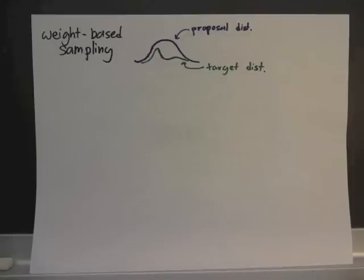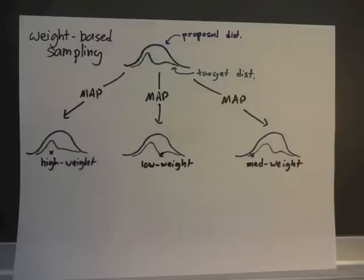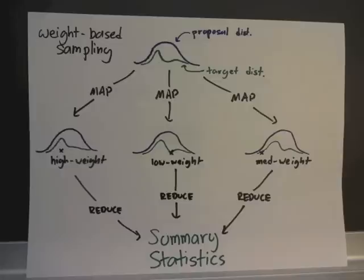Our first contribution is parallelizing weight-based sampling through MapReduce. Our input is a target distribution of interest and a proposal distribution we can sample from. MapReduce first maps out sampling and weighting duties to various processes, then reduces to calculate summary statistics.